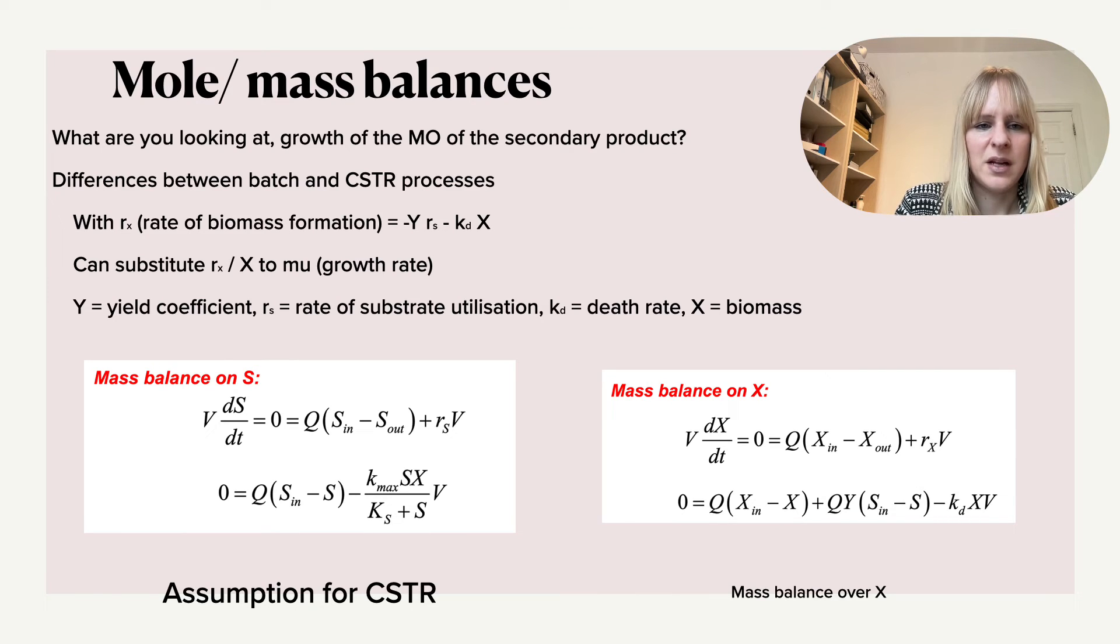So then if we consider, and here we have to make the assumption that nothing is accumulating. So we say that this comes down to zero. So there's no additional mass. These are some of the general mass balances that you can set up where you consider the flow that goes in, the substrate in, the substrate going out, and then also how much is being used. So this is this rate of the substrate utilization times the volume.